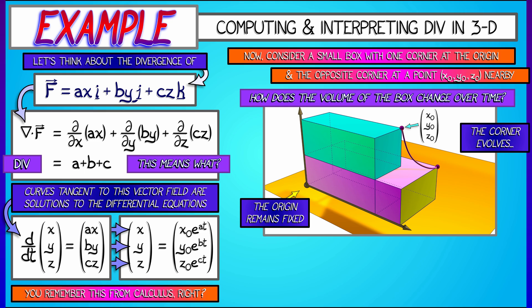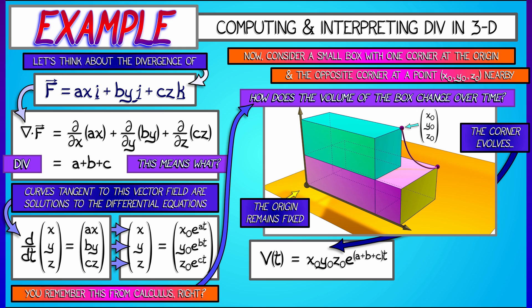Now, let's apply this to what is happening to this small volume element. If I let the corner of the box evolve according to these differential equations, I get that the volume of the evolved box is x-naught times e to the at times y-naught e to the bt times z-naught e to the ct. If I take that volume as a function of time and compute the relative rate of change...